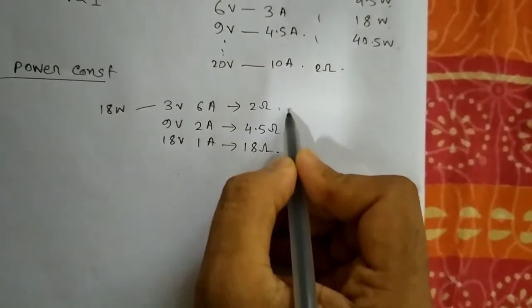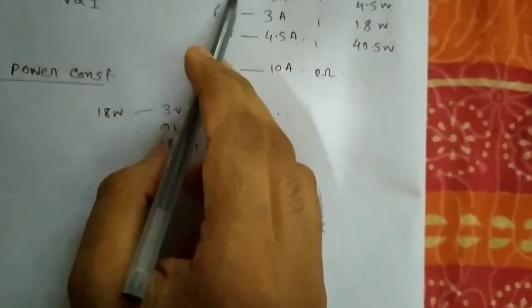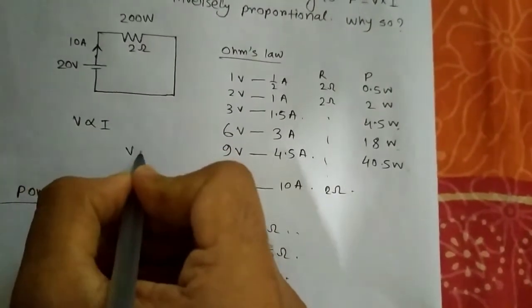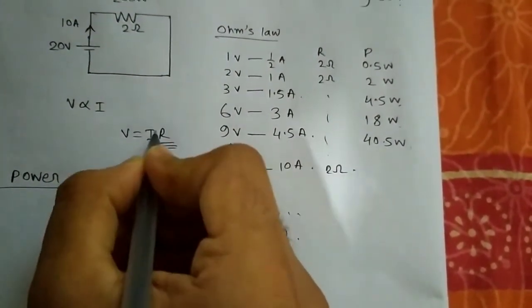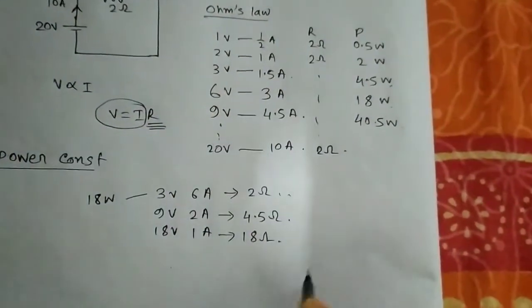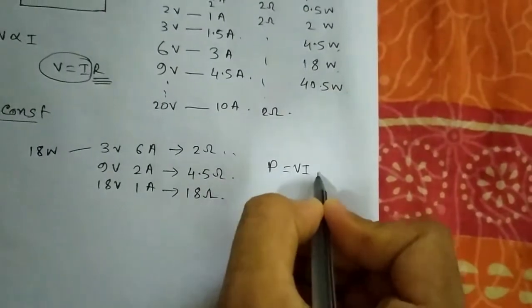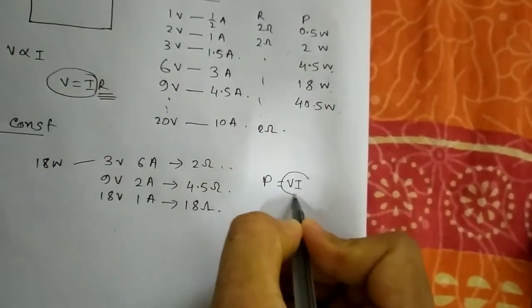You can see while the resistance is changing, this property of Ohm's Law is not valid. Because Ohm's Law itself says that V equals IR when R is constant. Then only this happens. And in the power equation, P equals VI. In this scenario also, V and I change when the power is constant.